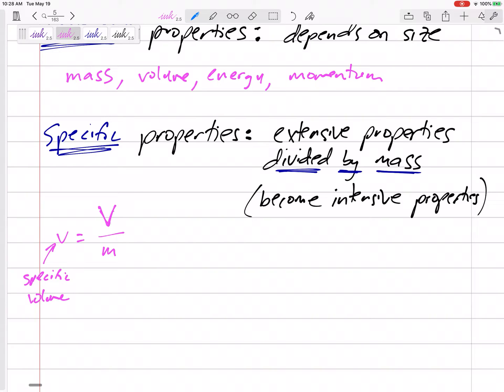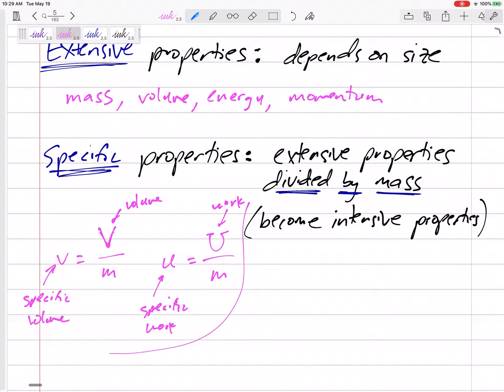We can look at specific work, lowercase u. Specific work, lowercase u is uppercase U divided by m, right? Work divided by mass. This is work. This is volume.